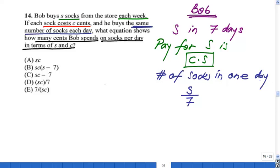Well, the cost of those socks in one day will be found by multiplying the number of socks times the cost per sock. And that's, if you want, the total amount of money that he pays for all the socks in one week, divided by seven days of the week.